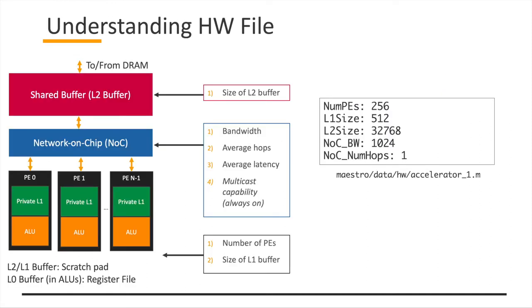Let me explain the hardware file, which is simpler compared with the mapping file. On the left we show the abstract hardware model that Maestro assumes, and on the right is the actual hardware file you have to create. As you can see, there are just configurations including number of PEs, L1 size, L2 size, NOC bandwidth, and NOC number of hubs. We are planning to extend to add more knobs here.